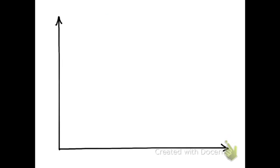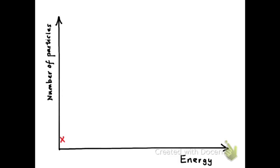The graph is plotted with the number of particles on the y-axis and their energy on the x-axis. The original work looked at the speed of particles within the gas sample, but since the speed of a particle is related to its kinetic energy, we simplify by simply looking at energy.